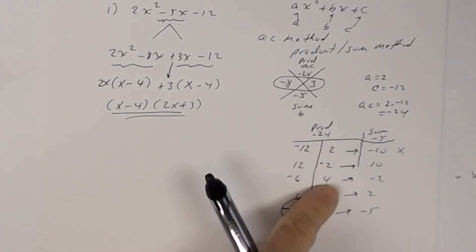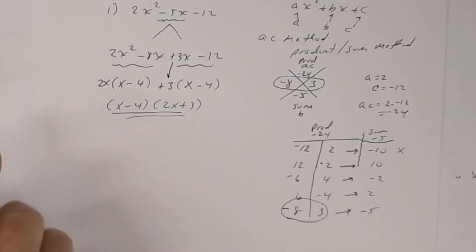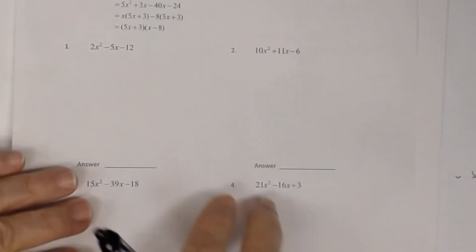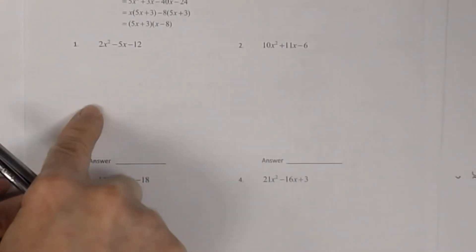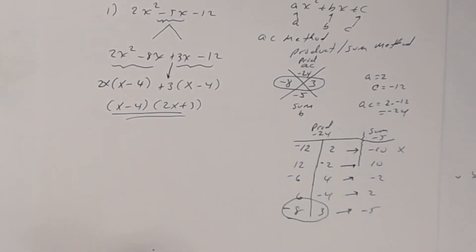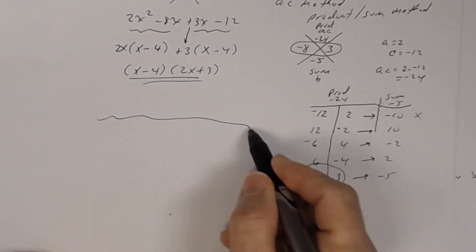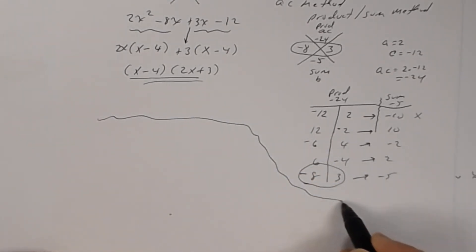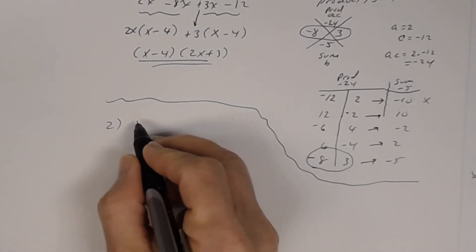That's the work you show. You don't have to show the scratch work — that's done on another sheet of paper. You just need to show what I showed here to get full credit. Alright, that's number one. Now let's look at number two.